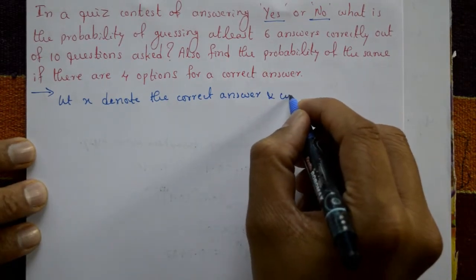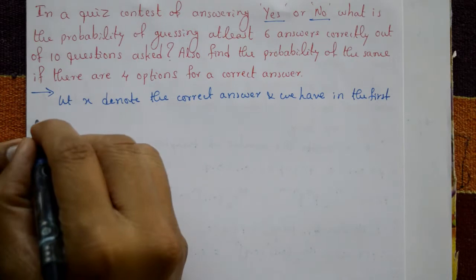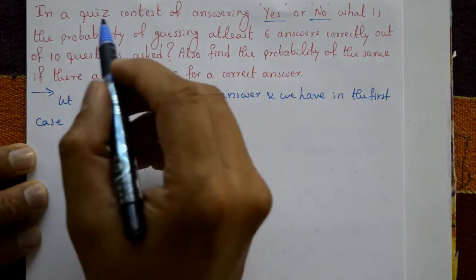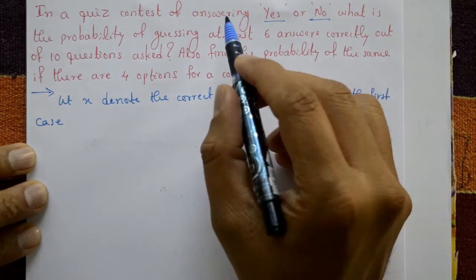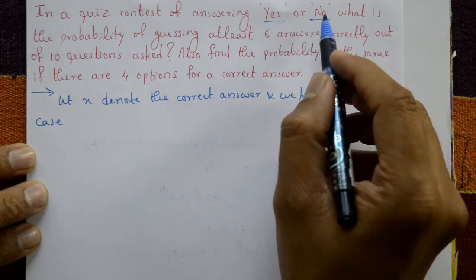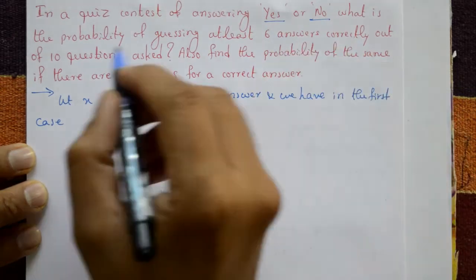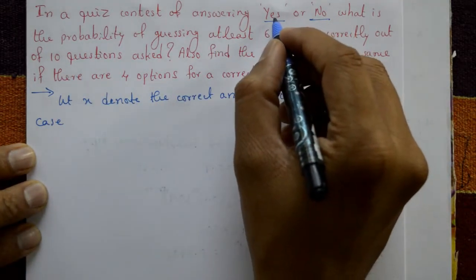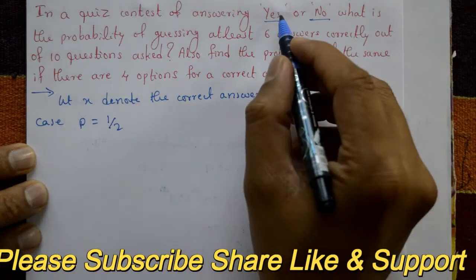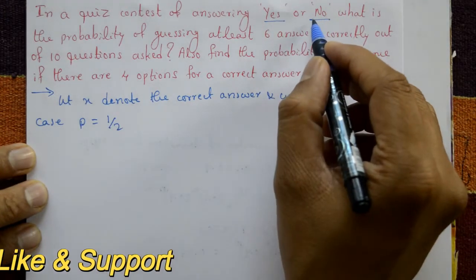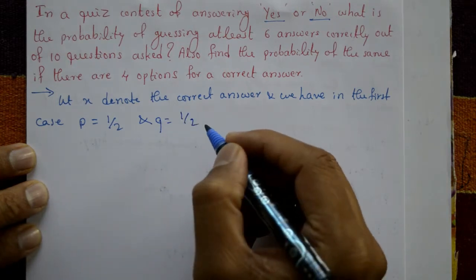In the first case, the quiz contest answer is yes or no only — two possibilities. The probability of guessing at least six correct answers out of ten questions: since one question has yes or no, P is equal to one by two. Total possibilities are two (yes and no), so P = 1/2 and Q = 1/2.